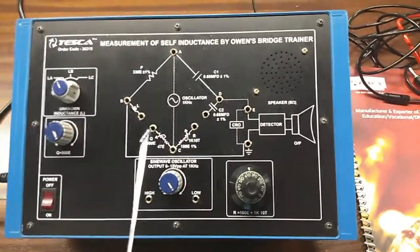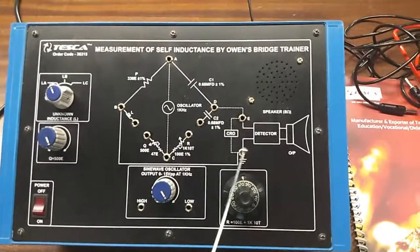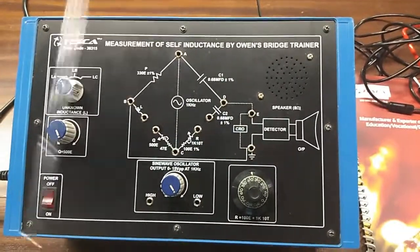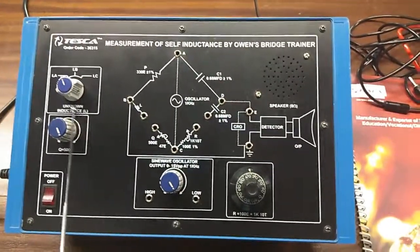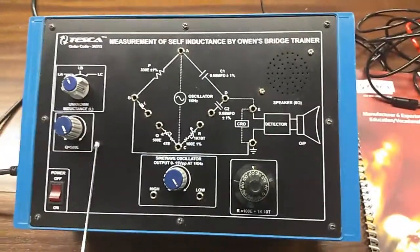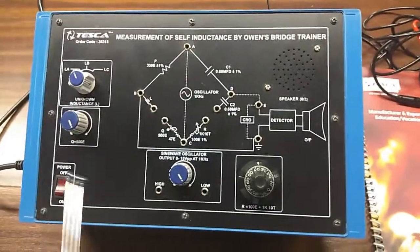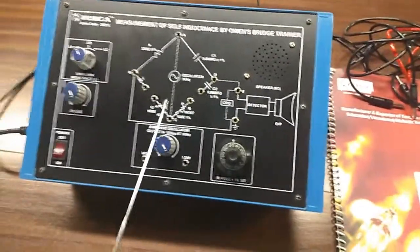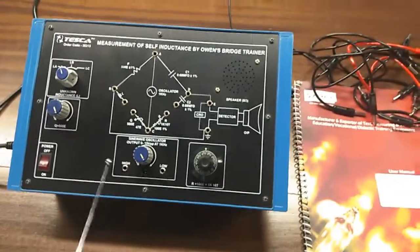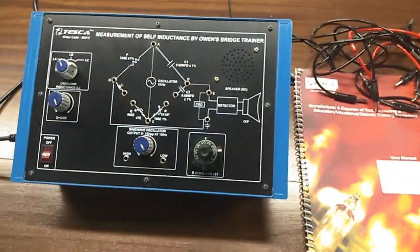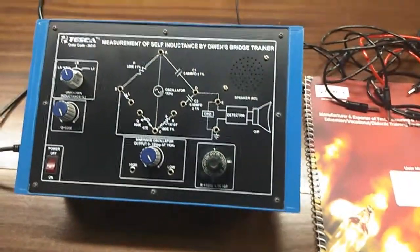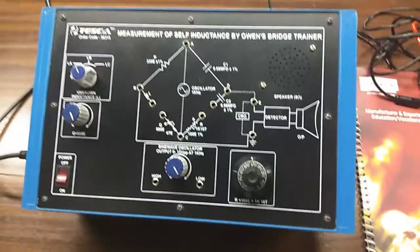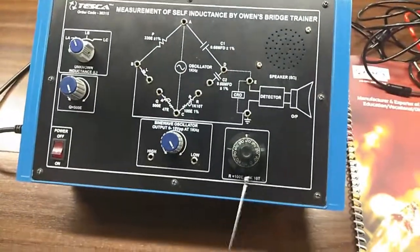This is the Trainer Kit. This is the mimic diagram given on the Trainer Kit. This is the bridge circuit diagram. This is the unknown inductance. This is the potentiometer. This is a sine wave oscillator of frequency 1 kilohertz — this is inbuilt — and this is also a potentiometer R of 100 ohms plus 1 kilohm.